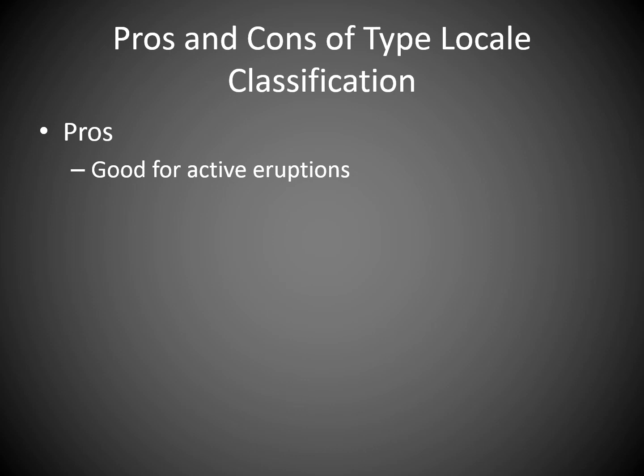The last couple of class periods, we've been talking about how to classify volcanic eruptions so that we have a working vocabulary when a new volcano pops up — what kind of activity is it showing? How does it compare to other eruptions? We looked at a couple of different classification schemes, but we spent most of our time on the type locality scheme: Hawaiian, Strombolian, Vulcanian, Plinian, Ultra-Plinian — those are the major types.